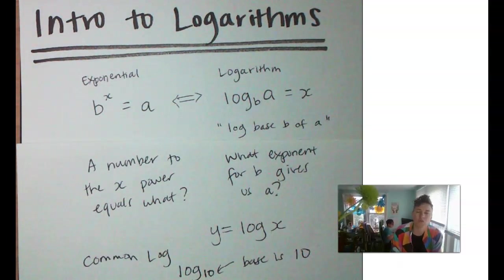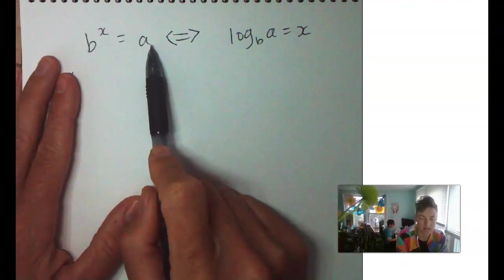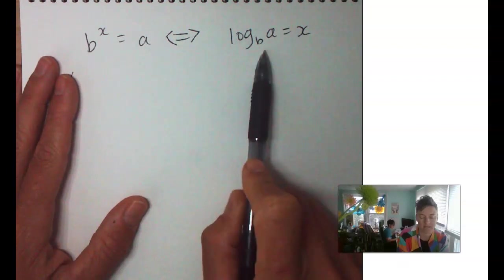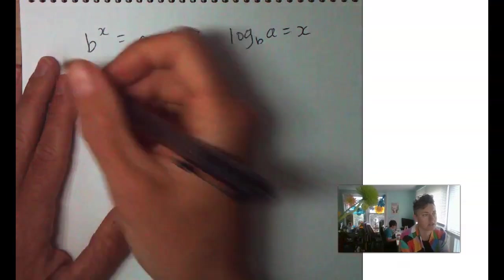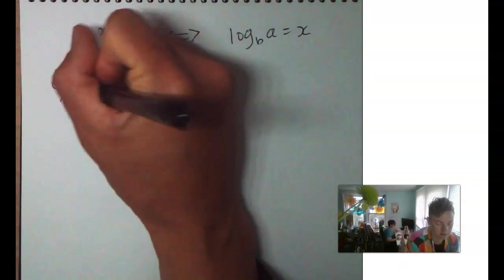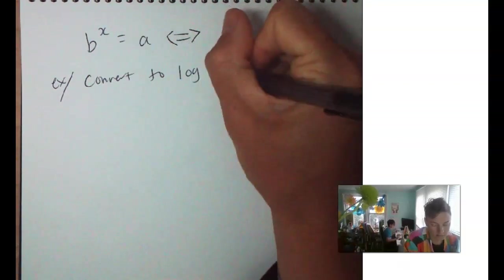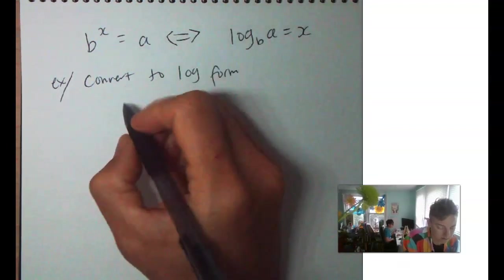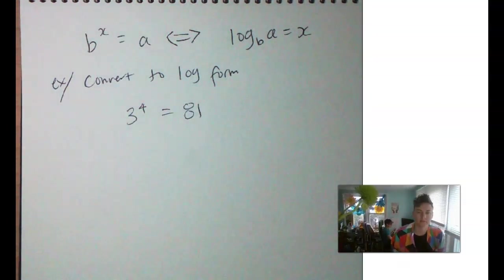Okay, let's do some practice writing stuff in log form from exponential form. I rewrote our rule here. Exponential form b to the x equals a and log form log base b of a equals x. So, for example, we're going to convert to log form this 3 to the 4th power equals 81. Okay?